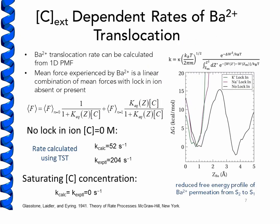To go a step further and estimate a rate of barium translocation, we can reduce the two-dimensional PMF to two surfaces giving the free energy of the system as a function of barium ion position. One corresponds to barium locked into S2 by an external ion in S0, and the second has no external ion. The mean force experienced by barium is a linear combination of these two regimes. When the external concentration of lock-in ions is zero, we see a barrier of around 15 kcal per mole, and using Kramers' rate theory we calculated a rate of roughly 52 reciprocal seconds, in reasonable agreement with the experimental value of 204 reciprocal seconds. When the concentration of the lock-in ion is saturating, we see a rate of zero, consistent with barium being physically blocked from moving further because there is always an ion bound immediately adjacent to it.